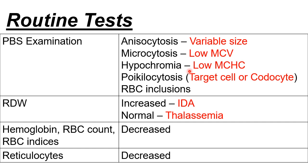Hypochromia — the RBC index used to interpret hypochromia is MCHC. In hypochromia, there is a low MCHC. Next, poikilocytosis means there is a variation of RBC shapes. The normal shape of your RBC is a biconcave disc shape. In iron disorders, we can observe various abnormal shapes.